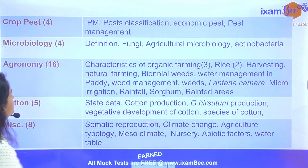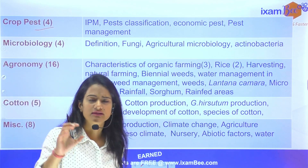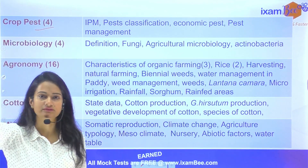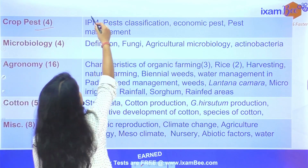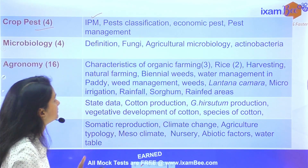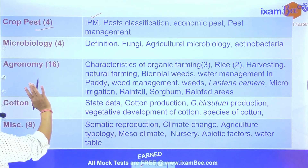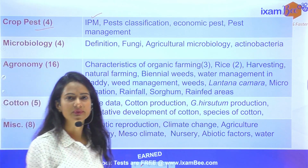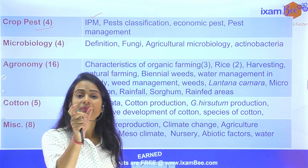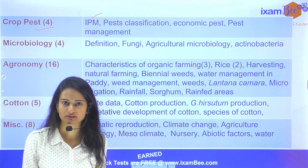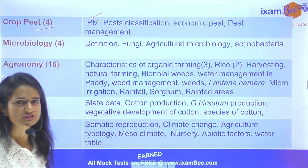Next aate hai crop pest pe. Crop pest se related — economic pest kis level pe jaake hota hai, IPM pe question tha — Integrated Pest Management — pest classification, economic pest pe. Pest management kaisa hota hai, IPM kya hota hai, IPM ka full form basically puchha gaya tha — that was an easy question.